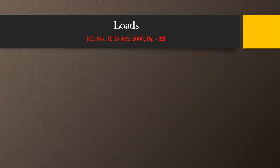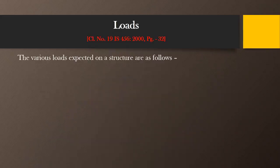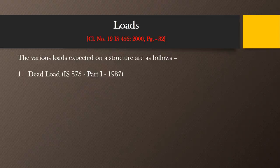The specifications about load have been given in clause 19 of IS 456-2000 on page 32. As per the clause, the loads which are acting on the structure can be classified as follows. The first and very important load is the dead load. Dead load is nothing but the self-weight of the structure or structural components. For calculation of these dead loads, it is specified that we must use IS 875 part 1.